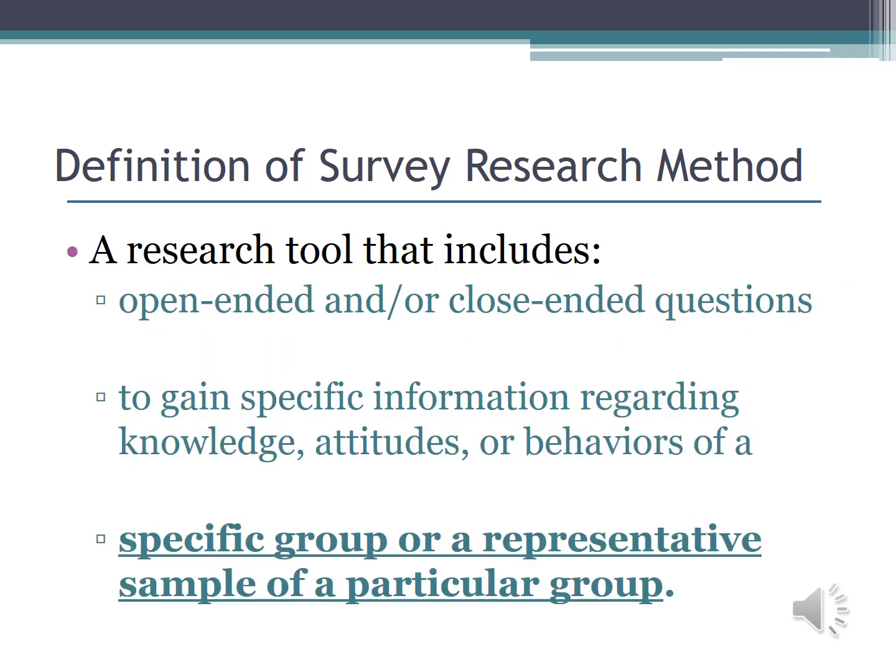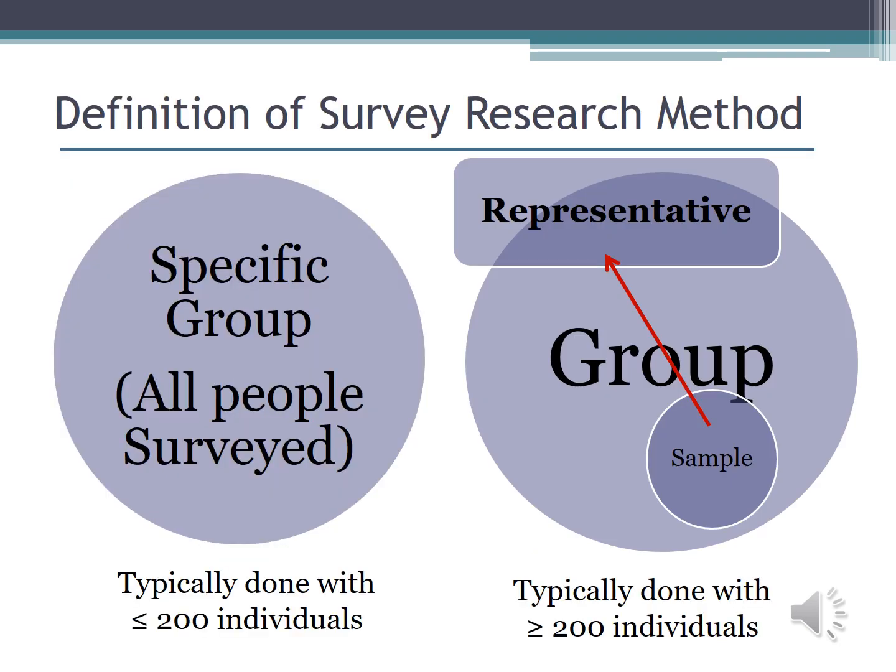Survey research is a research tool that works with a specific group or a representative sample of a particular group. If we have fewer than 200 individuals, we may survey the entire group, called a population. If we have more than 200 people, we are going to want a sample, and the best way to do this is to get a representative sample.